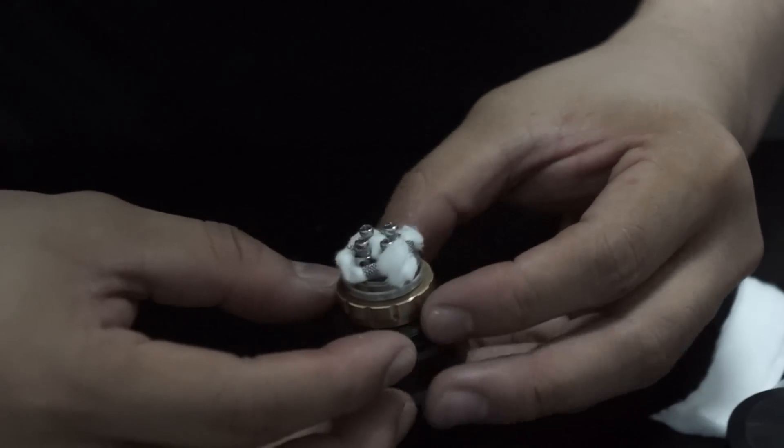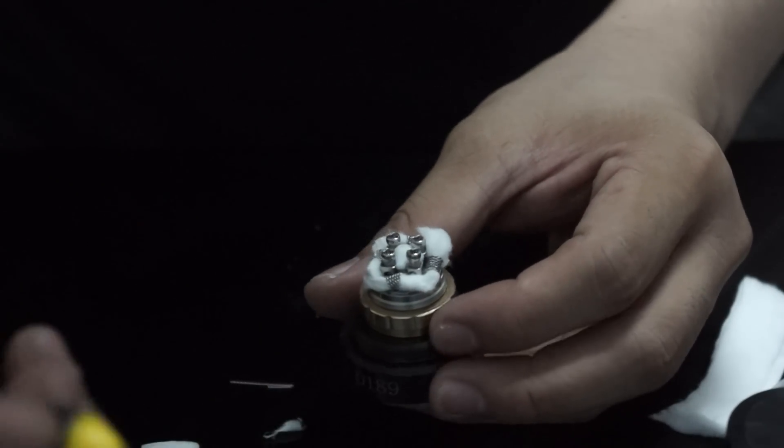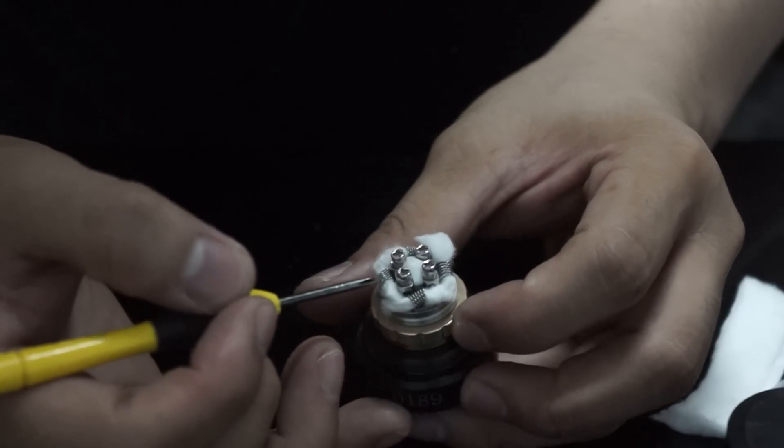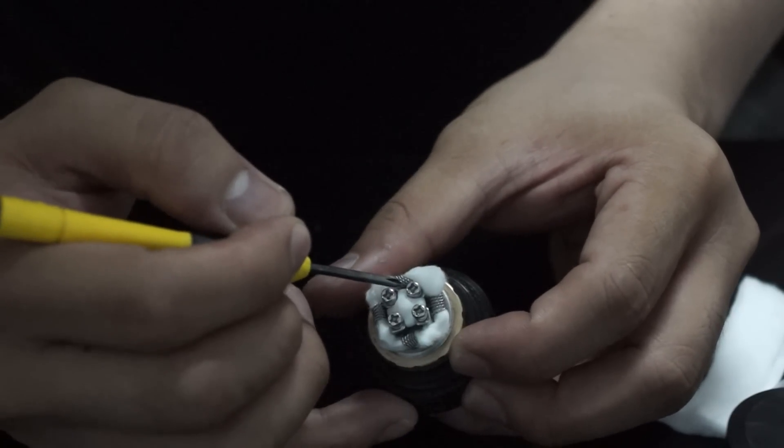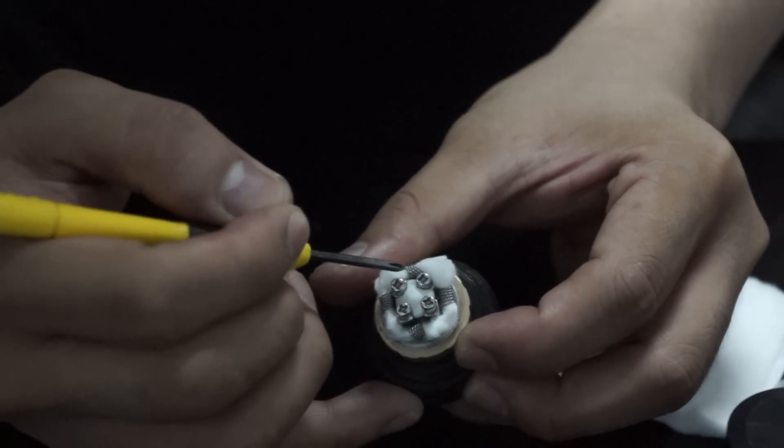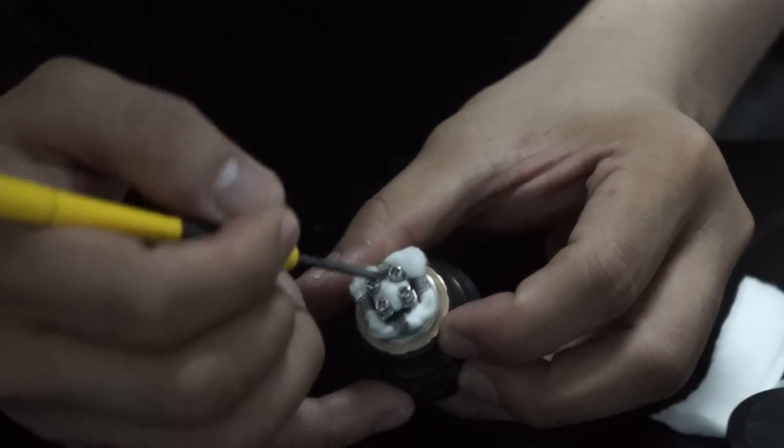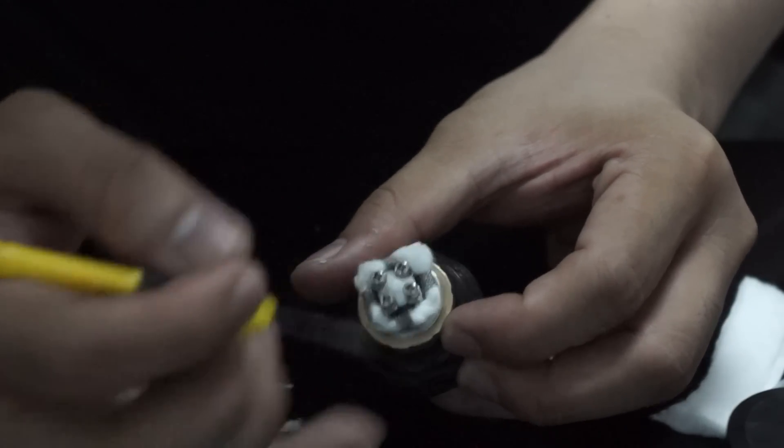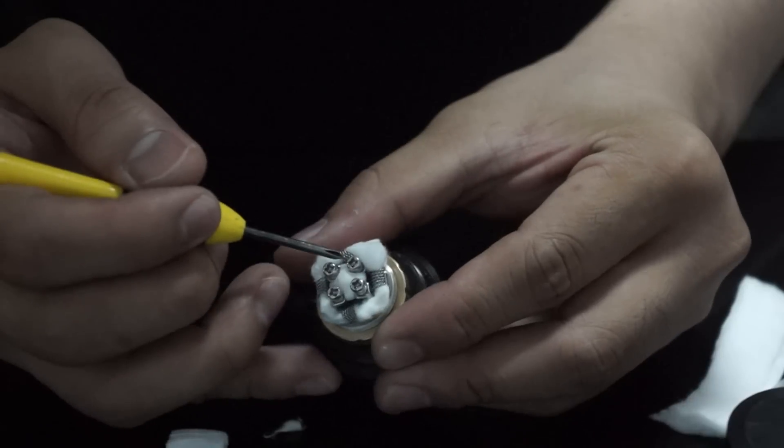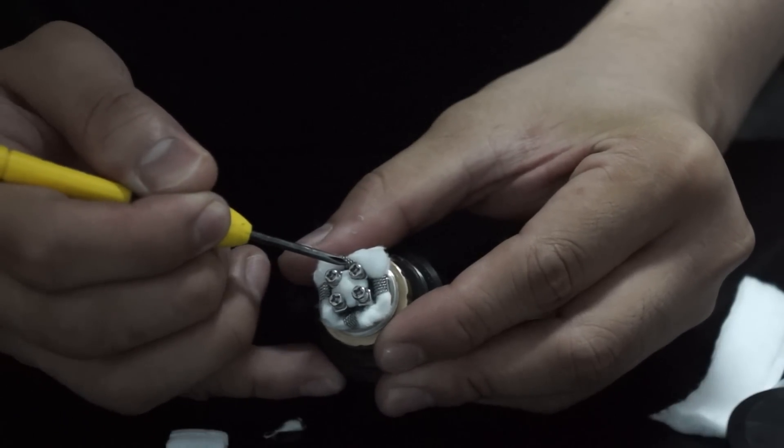That's it. So just put in your juice. Or, one more thing to take note of is that there will be times where your build will be too close to the juice guide on the center. So you just need to make sure that you put a bit of distance on it.